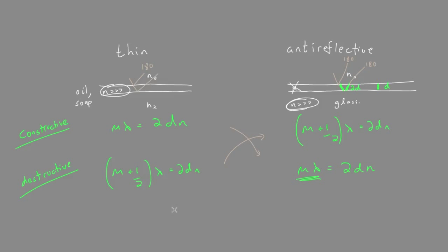The question is why does an anti-reflective coating use a different equation than thin films? Because isn't it a thin film?